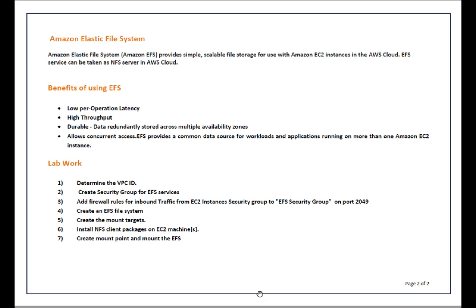I have listed a couple of benefits of using EFS: low per-operational latency, high throughput, and durable — meaning data is redundantly stored across multiple availability zones. EFS also allows concurrent access, meaning multiple EC2 instances can mount a common EFS file system and perform read/write operations or any type of IO at the same time.